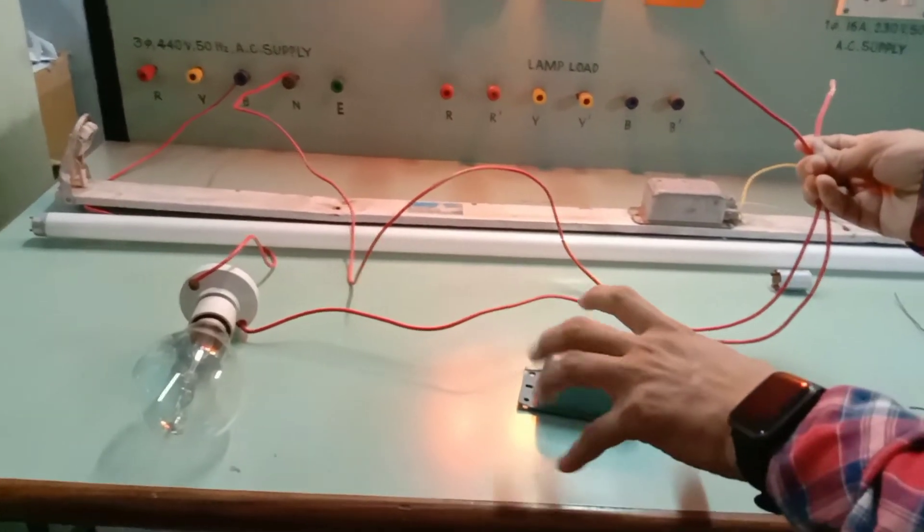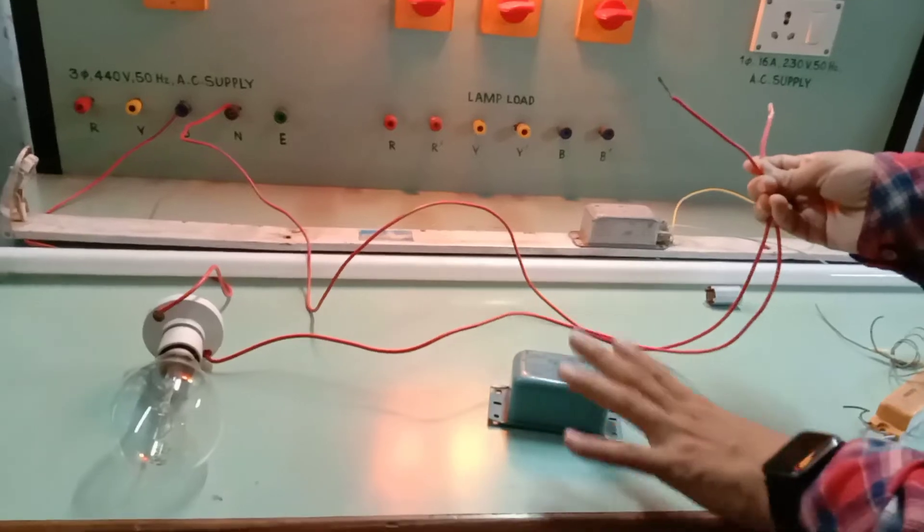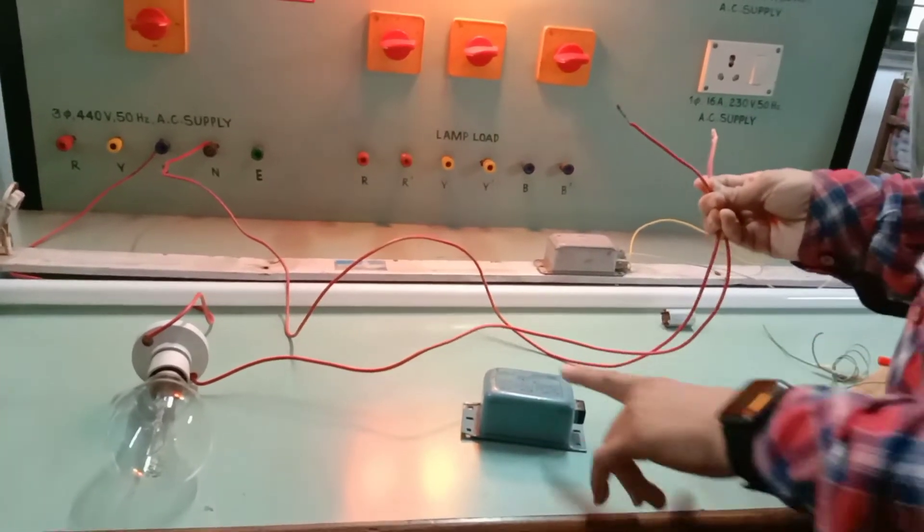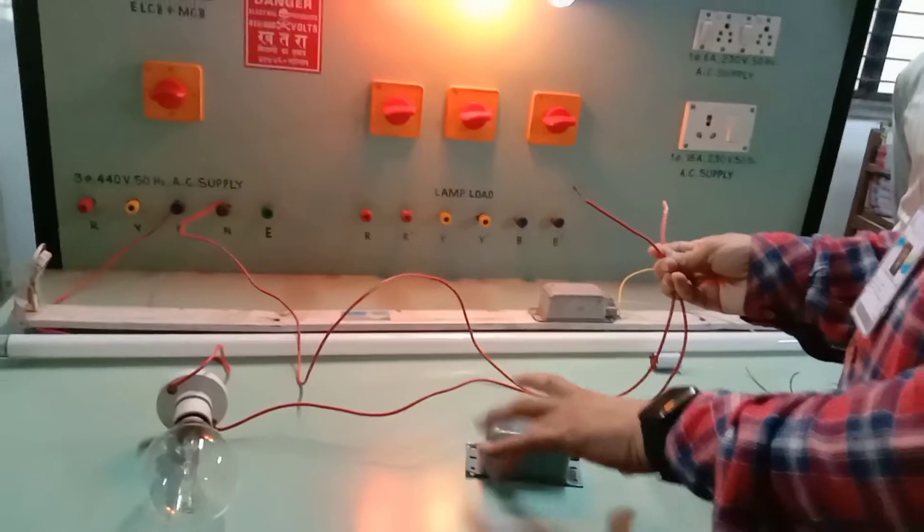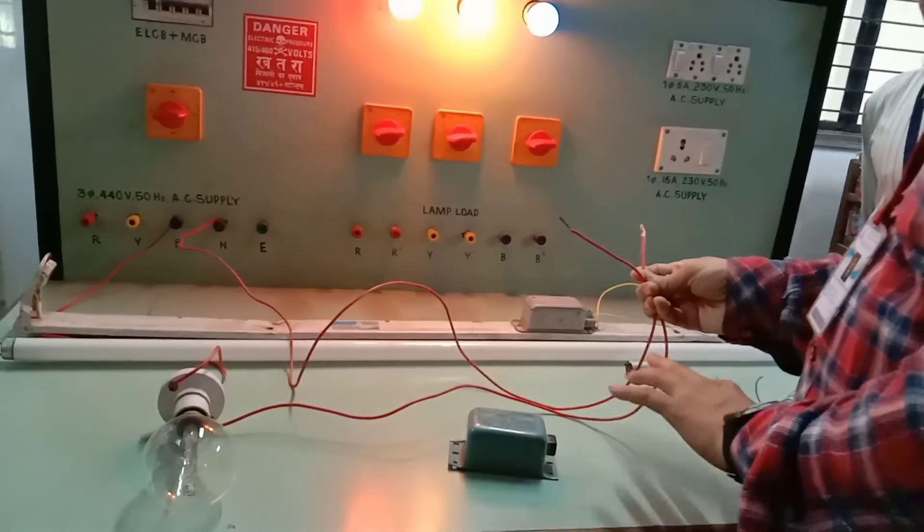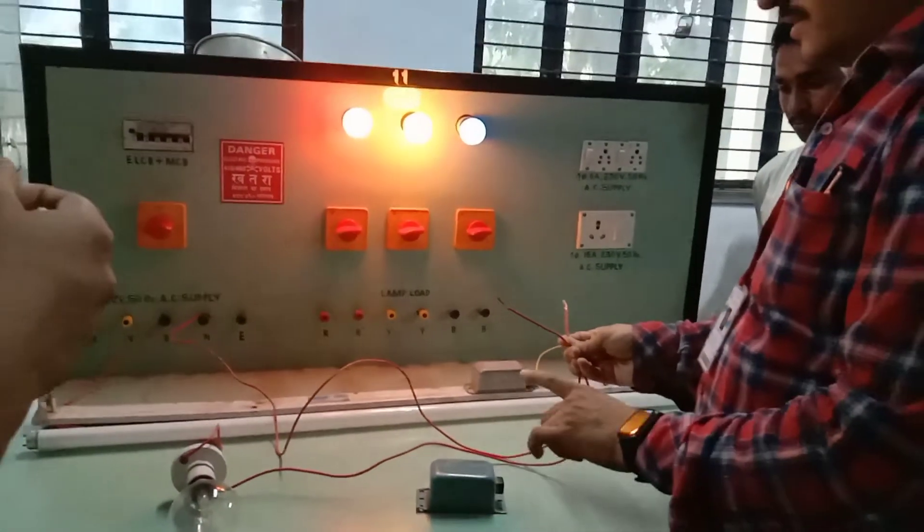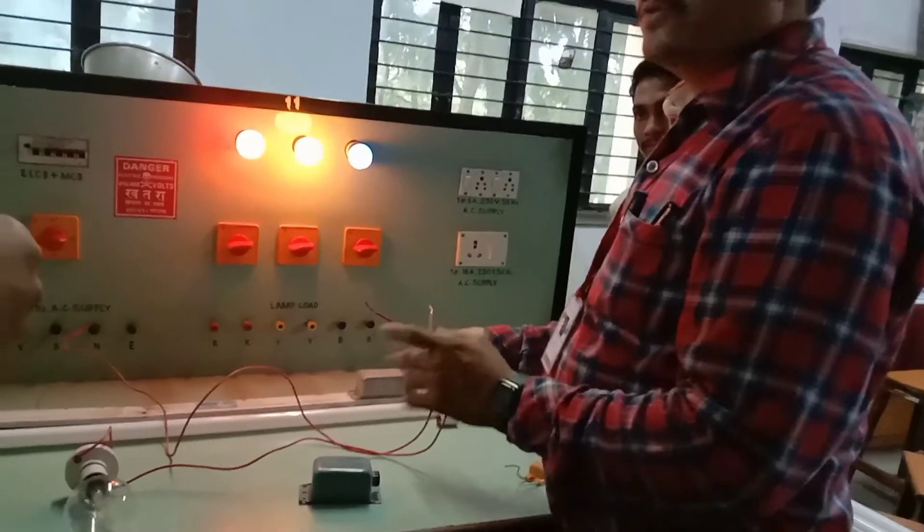If this choke glows dim, it means that choke is okay. If that choke glows brightly, it means that choke is short circuited. If choke does not glow, it means choke is open circuited or choke is faulty. Now we will test the choke.